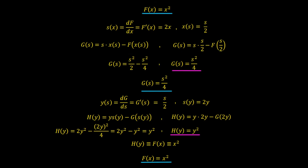We started from f(x) = x², applied the Legendre transform to get g(s) = s²/4, then applied the Legendre transform again to get back to x². This confirms that the forward and inverse Legendre transforms are the same process, and x and s form a conjugate pair.